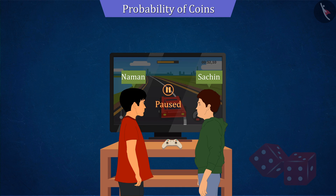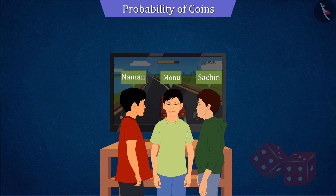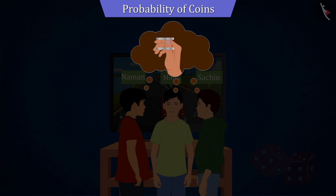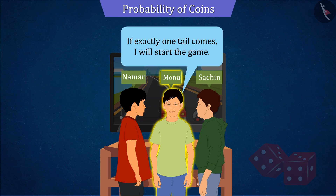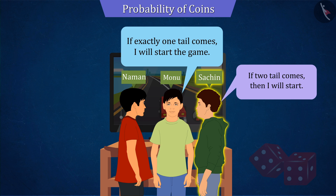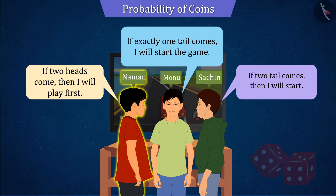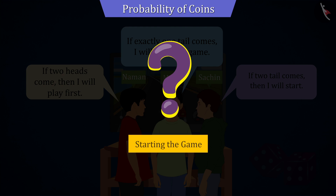While Sachin and Naman were discussing, their friend Monu comes. He too wanted to play video games, due to which the same problem arises between them — who will start the game first? Since only two results are obtained from a coin, this time they think of making decisions by tossing two coins. Monu says that if exactly one tail comes, he will start the game. Sachin says that if two tails come, then he will start. While Naman says if two heads come, then he will play first. Then, can you tell who will start the game first?